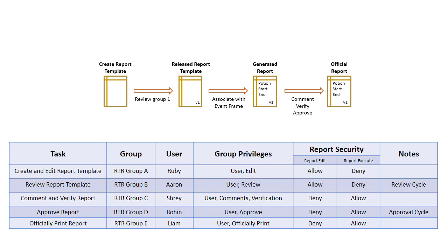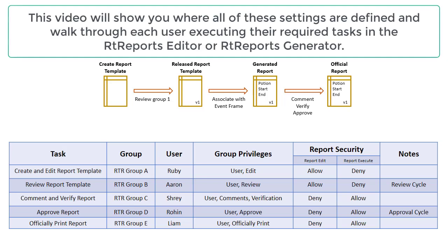To set up these permissions, there are two main places where we make changes: group privileges and report security, both set up in the RT reports editor. Group privileges are the permissions granted if and only if you are also provided the matching report security settings on a specific report. For example, Erin is allowed to review reports but only for those specific reports where report edit is set to allow, and Ruby is allowed to edit reports but only on the reports where she has been granted report edit allow.